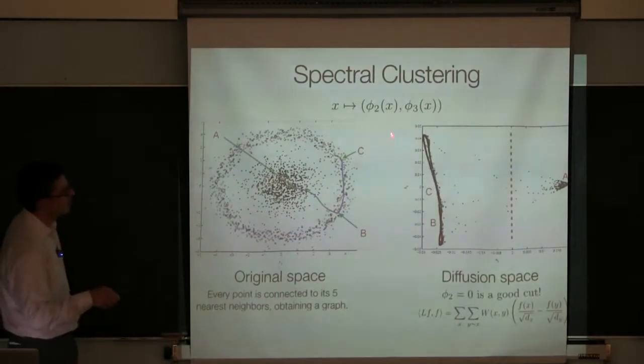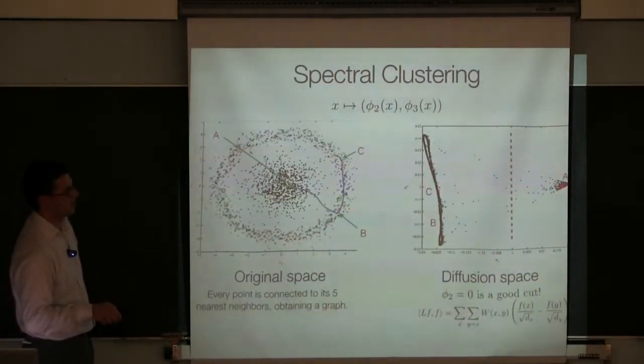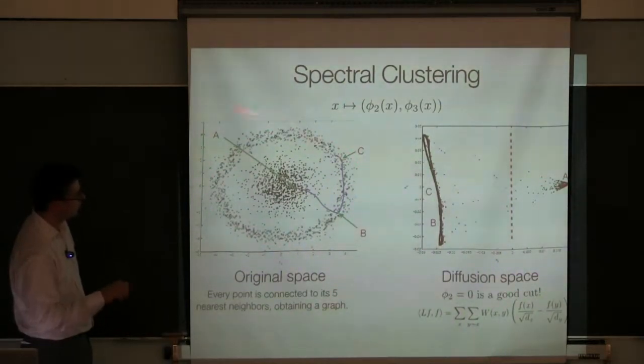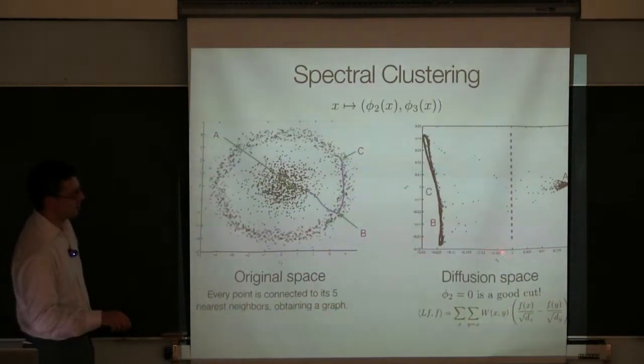And so if you go and you construct a random walk by connecting each point to the neighbors and you do diffusion maps, this is the image that you get. You get all the points in A are over here, all the points on the circle are over here. And the first eigenvector, if you look at the level set zero of the eigenvector, says cut here, you will be obtaining two good clusters.